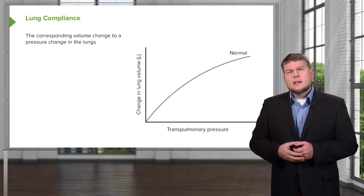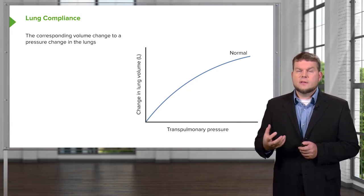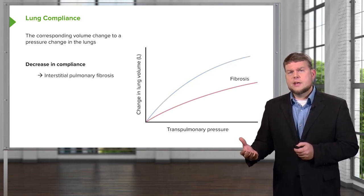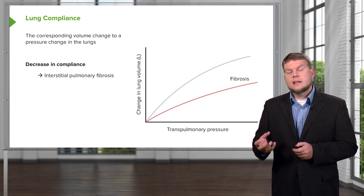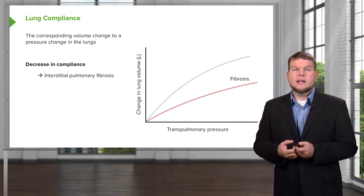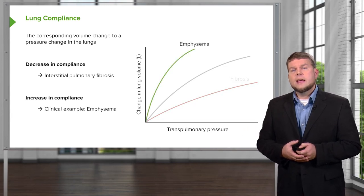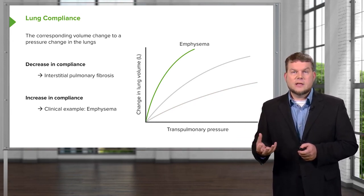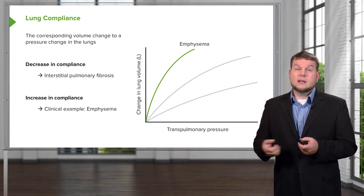Ventilation also relies on lung compliance. Compliance is the inverse of stiffness — how stiff the lungs are. Normally you have a nicely compliant lung. However, this can change in disease states such as interstitial pulmonary fibrosis, where scar tissue forms in the lungs, increasing collagen fibers and making the tissue less pliable. Therefore, compliance decreases. In emphysema, by contrast, there is an increase in compliance because the pathophysiology breaks down elastin fibers, making the lung less stiff and more floppy.